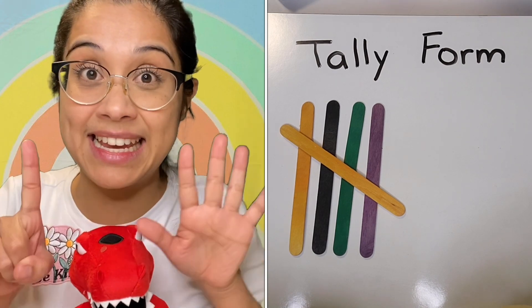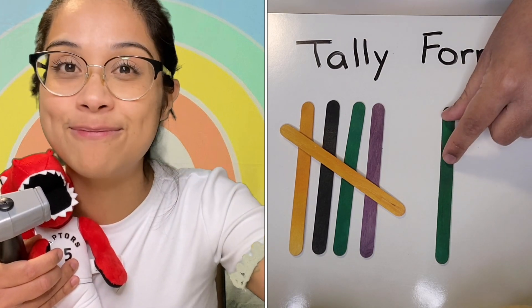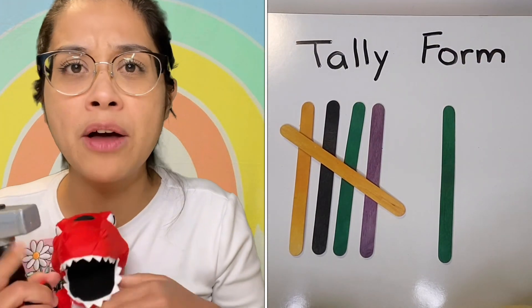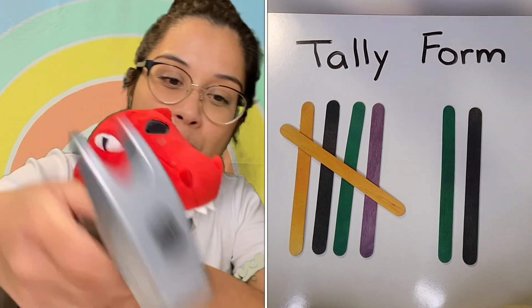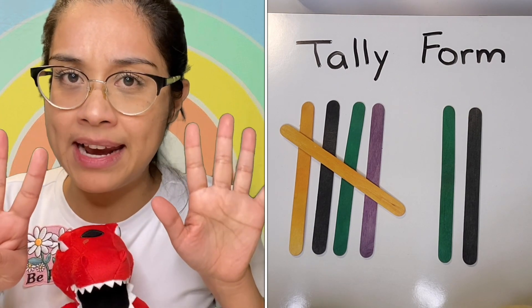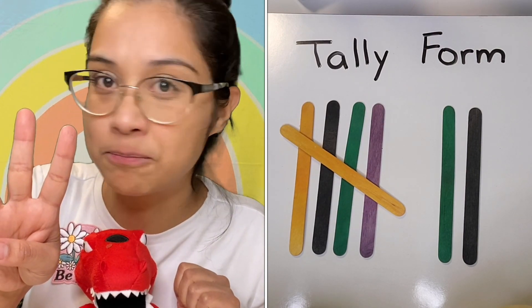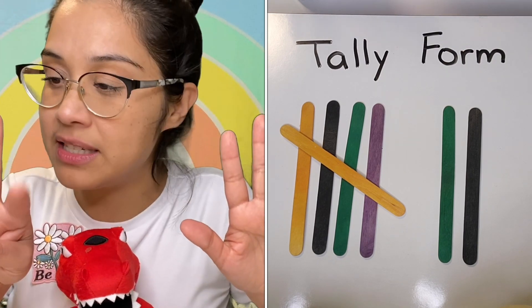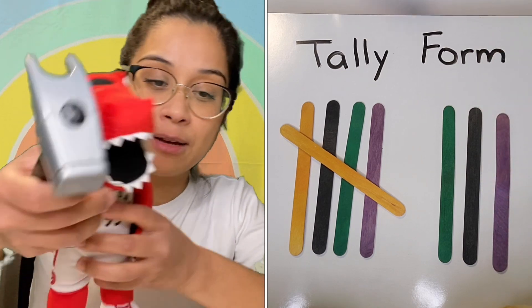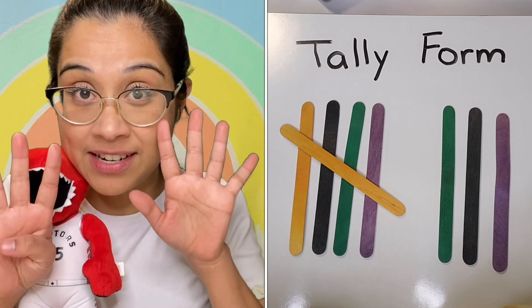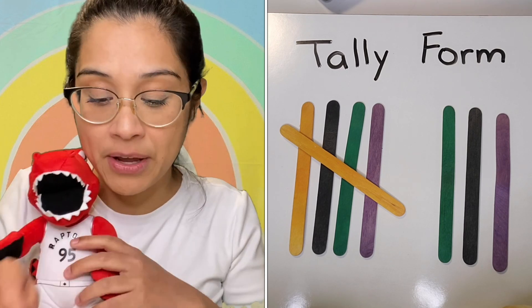Now for six fingers — we already have five, so we add one more and start a new fence. For seven, add another straight line. For eight: we already have a group of five, so it's five, six, seven, eight — that eighth one is still a straight part of the fence. For nine, we have one full group of five and four more sticking up, so this one still goes straight.